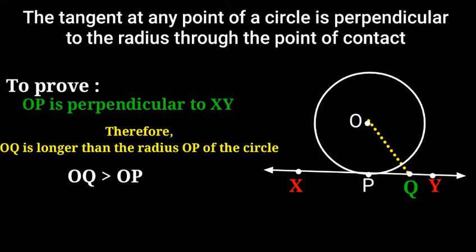This must happen for all points on the line XY. It is therefore true that OP is the shortest of all the distances from the point O to the points of XY.